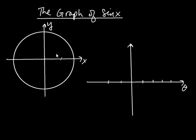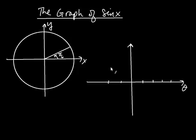Every time we draw an angle on the circle — for example, a 30-degree angle — that angle is going to show up on the horizontal axis here. A 30-degree angle we know is pi over 6. So pi over 6, if we say 0 is at the origin, pi over 6 is going to be located here — you move to the right on the horizontal axis to indicate a counterclockwise rotation of pi over 6.